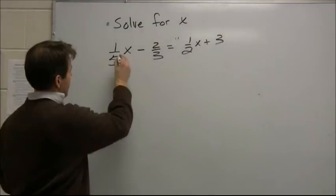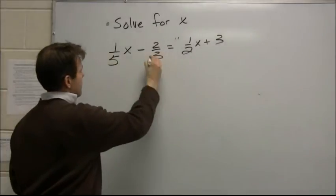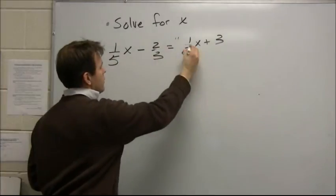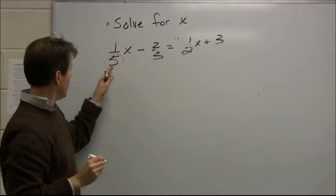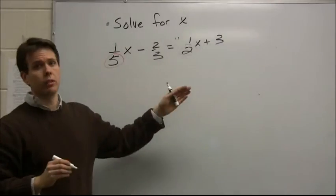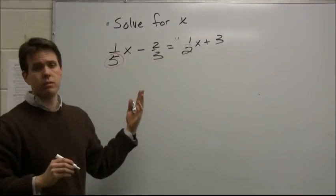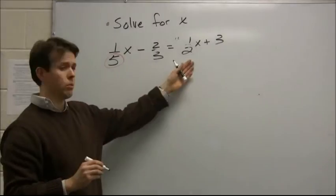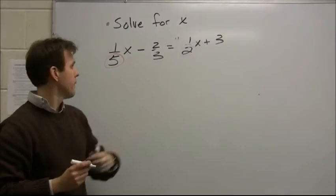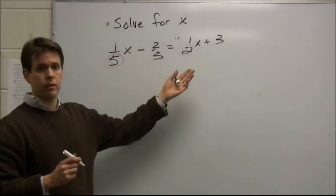So here we've got five, three, and two. What number will all three of these go into? Well, five and three both go into 15, but we've got this two. Two doesn't go into 15 evenly. So 15 times two is 30.